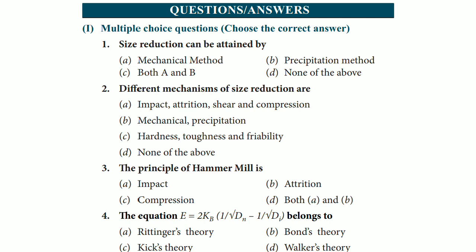If you focus on option C, hardness, toughness and friability, these might be some factors that we have already studied which will affect the reduction in size of the material that you are going to reduce in size. And option A deals with the various mechanisms: impact, attrition, shear and compression that appears to be the correct answer. If we put some focus on option B, that is mechanical and precipitation, these are the methods of size reduction not the mechanisms. So the correct answer is option A that is impact, attrition, shear and compression.